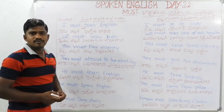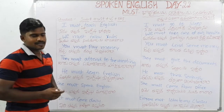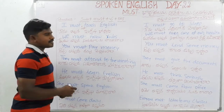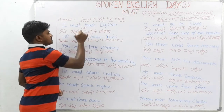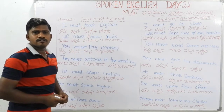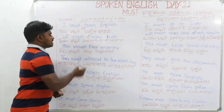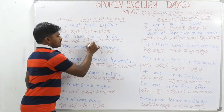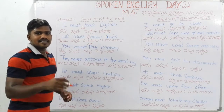Now for negative sentences. We must follow rules — the negative form is: we must not follow rules. You must pay money — the negative is: you must not pay money.